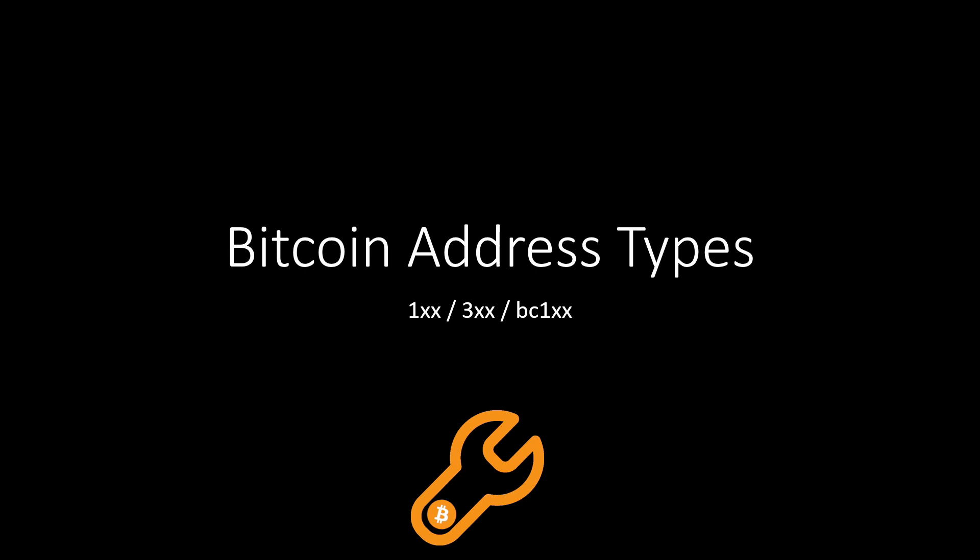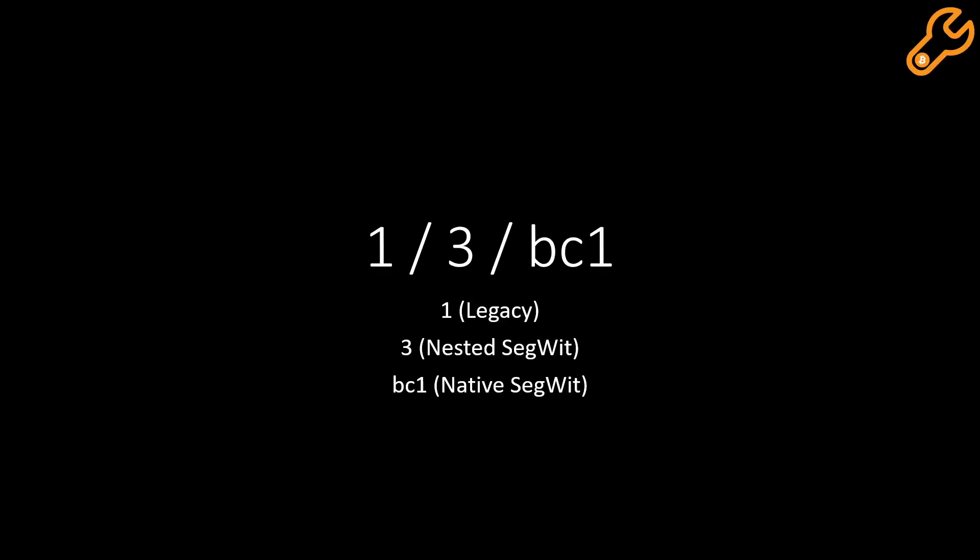Today we've got the Bitcoin address types. First we've got the one that starts with the number one, known as the legacy address. We've got the one that starts with three, known as the nested SegWit address, and the one that starts with bc1, known as native SegWit.